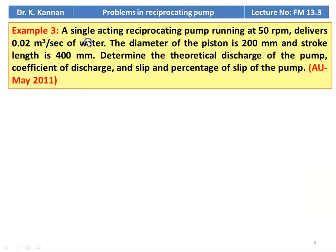Example number 3: A single acting reciprocating pump running at 50 RPM delivers 0.02 m³/s of water. The diameter of the piston is 200 mm and the stroke length is 400 mm. Determine the theoretical discharge, coefficient of discharge, slip and percentage of slip. This is from May 2011 question paper.